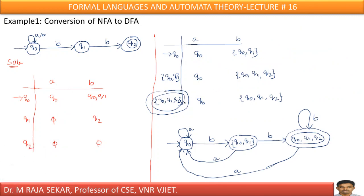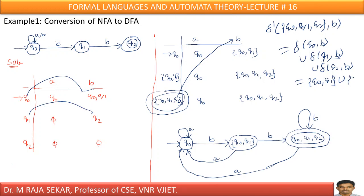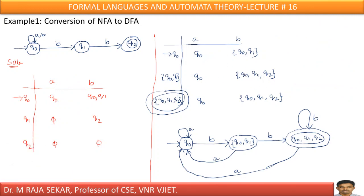Now, delta dash of Q0Q1Q2 on B: write delta of Q0 on B union delta of Q1 on B union delta of Q2 on B. Q0 on B means Q0Q1; Q1 on B means Q2; Q2 on B means empty. Taking the union, I get Q0Q1Q2. There are no other new states to write here, so I will stop here itself.